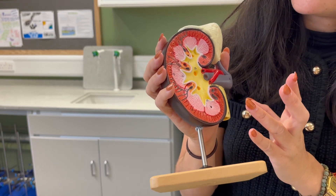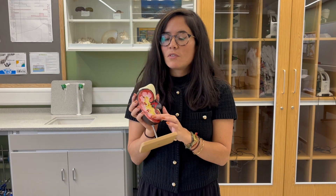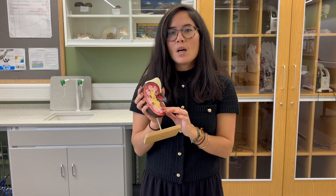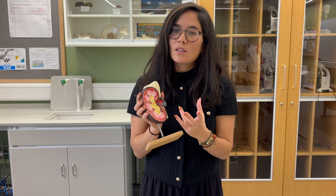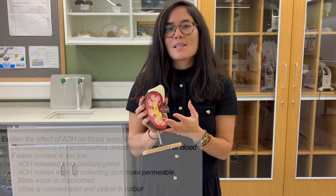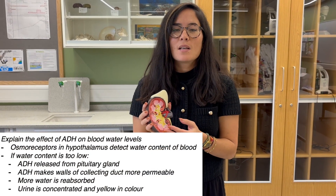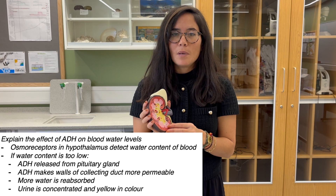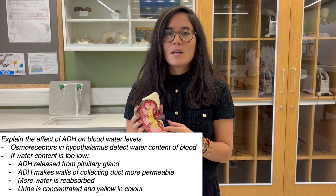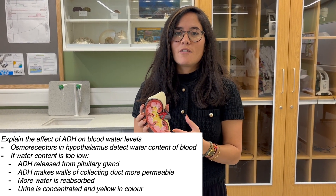Osmoregulation refers to the control of the blood water levels of our body. In a situation where we haven't had a lot to drink, we need to conserve our blood water levels. Osmoreceptors present in the hypothalamus detect low levels of water in the blood, and they send a signal to the pituitary gland located in the brain to secrete large amounts of the hormone ADH — anti-diuretic hormone.